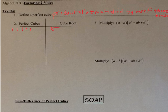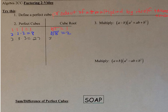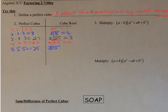2 times 2 times 2 is 8, so 8 is a perfect cube. The cube root of 8 is 2. 3 times 3 times 3 is 27, so 27 is a perfect cube — the cube root of 27 is 3. 4 times 4 times 4 is 64, so the cube root of 64 is 4. And 5 times 5 times 5 is 125, so the cube root of 125 is 5.